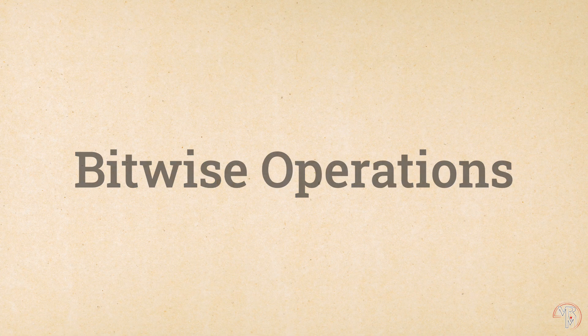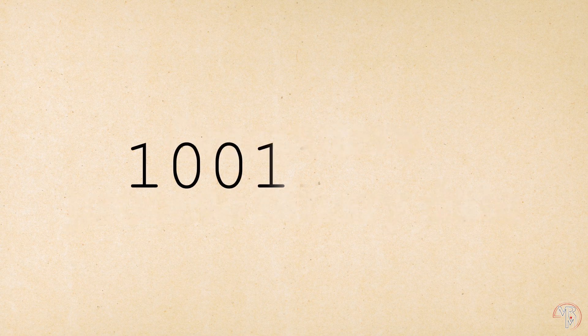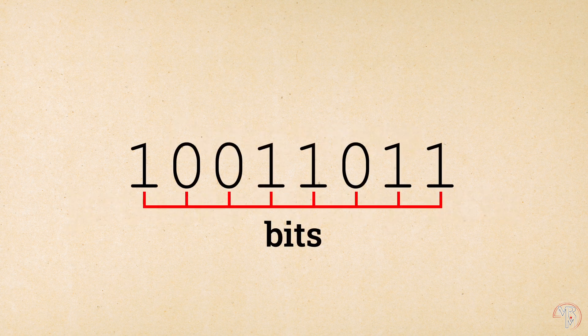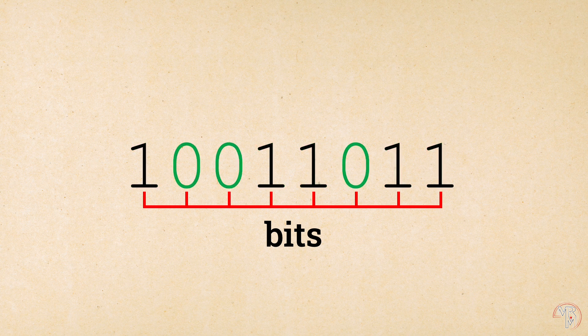Before we get to talking about bit masking, though, we need to talk about bits and bitwise operations in general. As you might already know, computers process binary data. Binary data is a sequence of bits, and each bit can have one of two possible values: 1 and 0, hence the name binary.